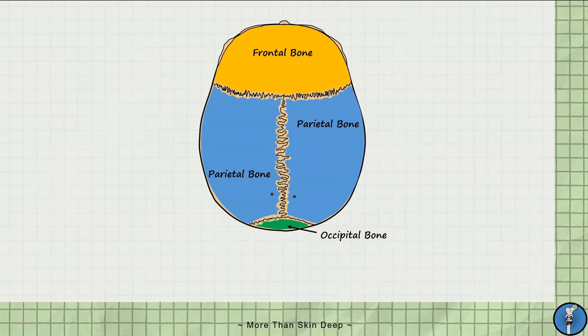You will notice a zigzag pattern where the bones meet and these are known as the sutures. From this view, we can observe three sutures: the coronal suture and sagittal suture, named according to the plane they sit in, and the lambdoid suture.